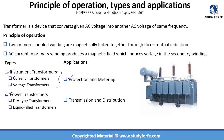Then we have power transformers, which are further classified as dry type transformers or liquid or oil-filled transformers, and these are primarily used for transmission and distribution. The big transformers you see in substations are power transformers, but the small CTs and VTs which you find inside switchgear or MCCs belong to the instrument transformer category.